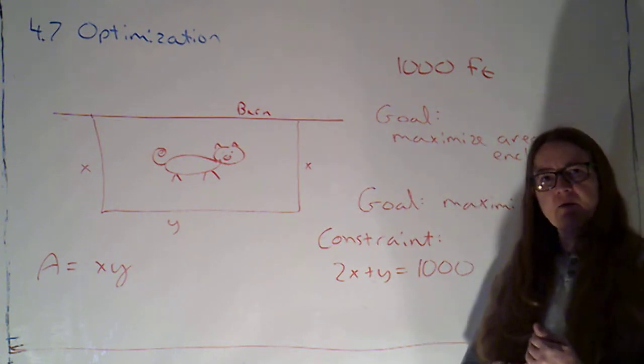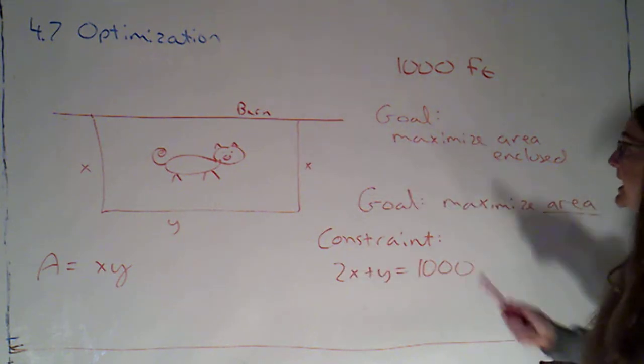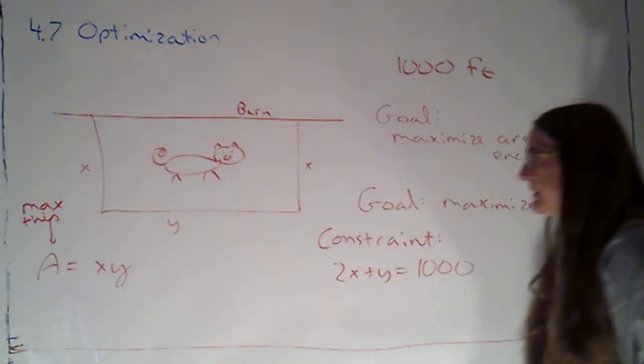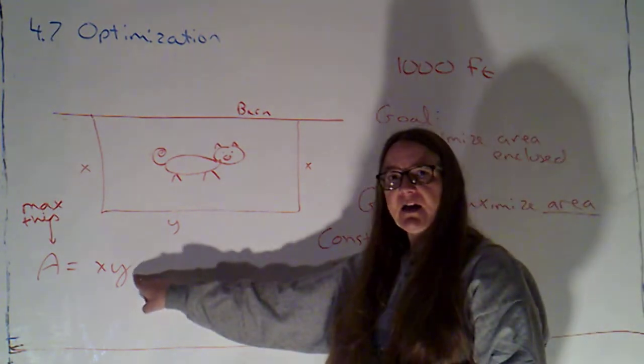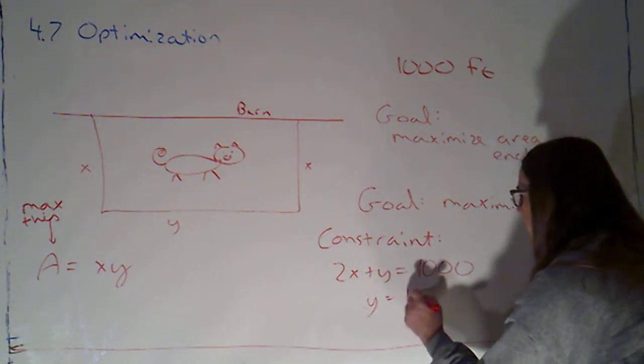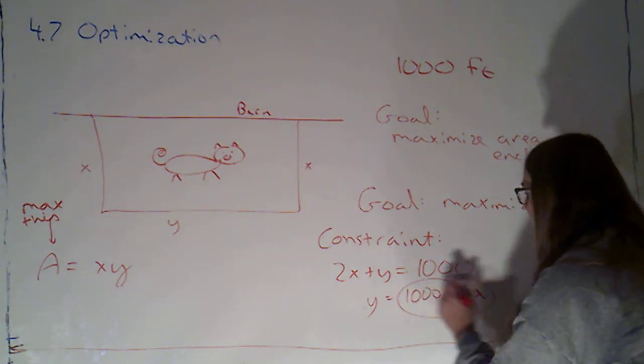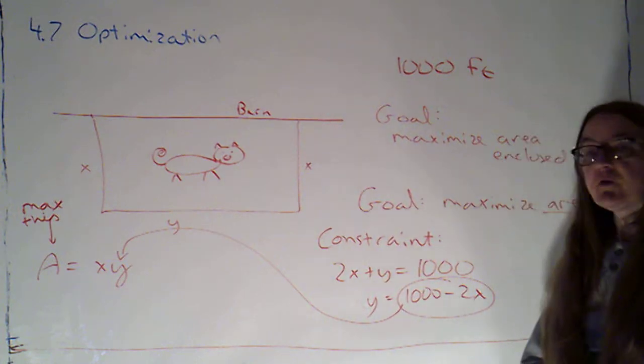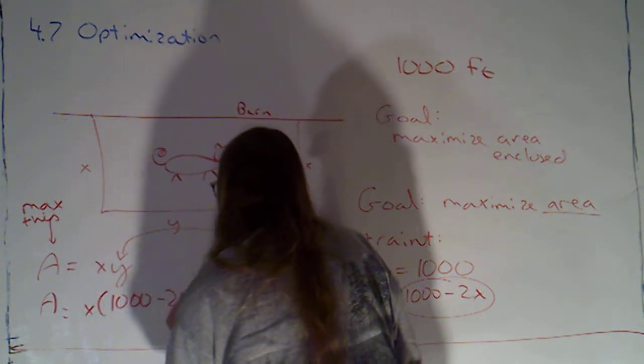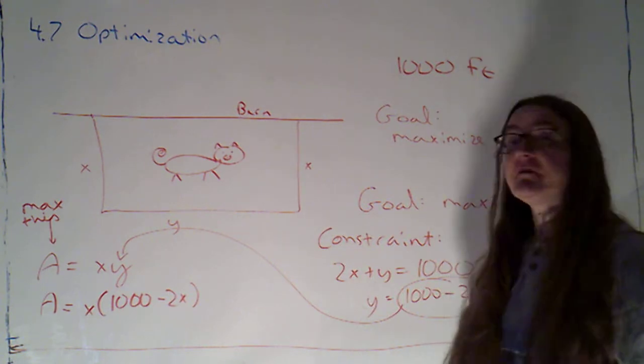So as you're working with these problems, be very strict with yourself. Start by saying, what is the thing I want to maximize or minimize? And what is my constraint? And I would clearly label which is which. So if this is the thing I want to maximize, that's the thing that I want to be a function of one variable. So what I'm going to do is I'm going to say, y is 1000 minus 2x. I can use the constraint to get a relationship between my two variables, and now I can just plug that in to my formula for area. The area is equal to x times 1000 minus 2x.